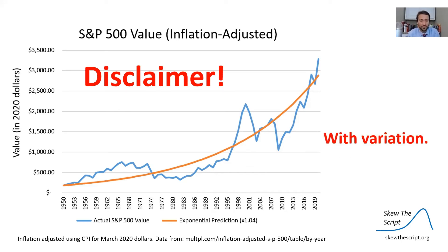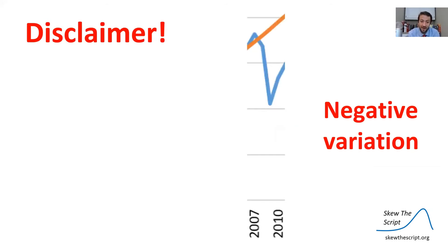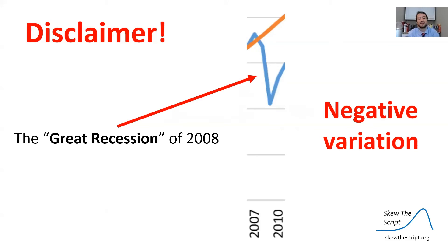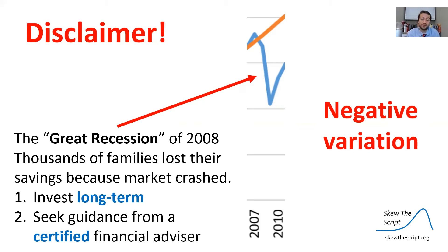A quick disclaimer before we move forward: the variation from that exponential growth line is very important. Specifically, there can be negative variation. Zooming into the period from 2007 to 2010, this indicates the Great Recession of 2008. Thousands of families lost their savings because the market crashed, and many investments lost about 50% of their value. Negative variation is very important to keep in mind — it's always important to invest long term, and most importantly, seek guidance from a certified financial advisor.